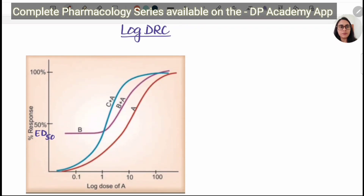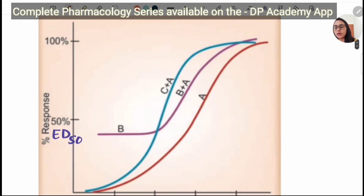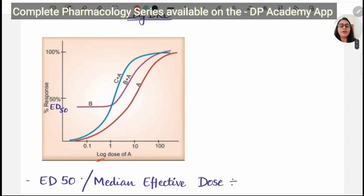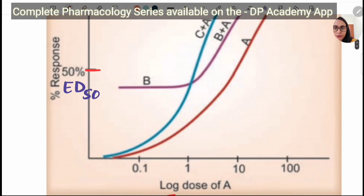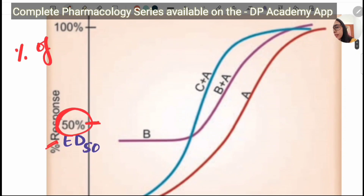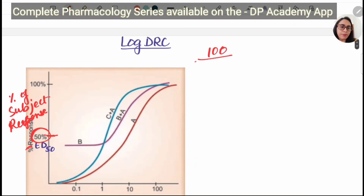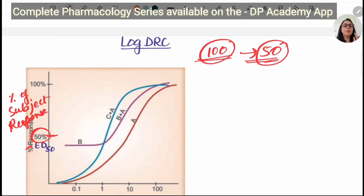Coming to the log DRC — the dose-response curve — we take response on the y-axis as percentage of subject response, and on the x-axis we take the log dose of a certain drug. This log DRC tells the effect of the drug on the population. We have ED50, which is present at the 50 percent mark. This 50 percent response is the effective dose in 50 percent of the population. For example, if you are testing a drug in 100 people, 50 percent of the people — that is 50 people — are responding to a particular dose.